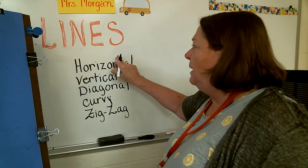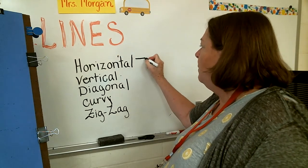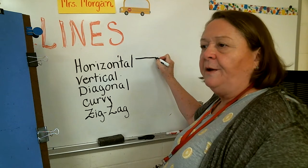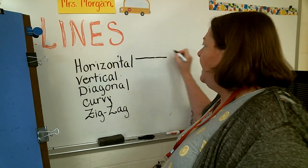The horizontal line is the line that goes back and forth, or if you were looking on a map, east and west, back and forth.